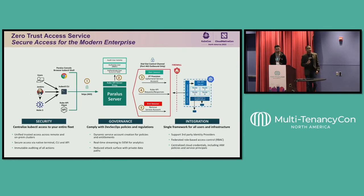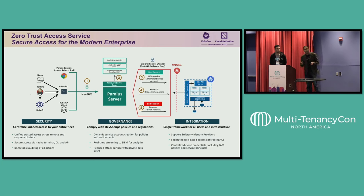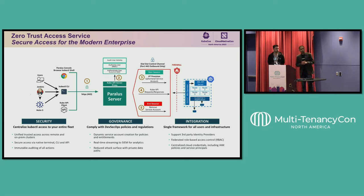Paralus has mainly two components. One is the Paralus server in the middle — the access proxy — and you would also install a lightweight Kubernetes operator, a Paralus operator, on the clusters. This maintains a long-standing connection with the Paralus server, so your firewall teams just have to allow outbound 443. There are no other things your platform team needs to allow for this to function.